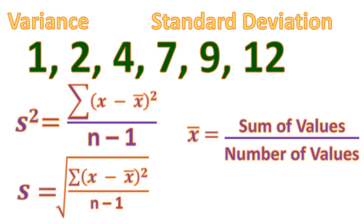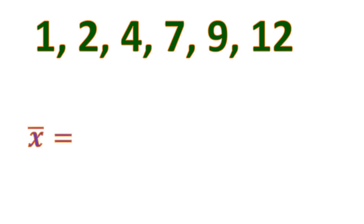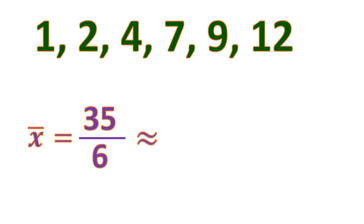The formula for mean is the sum of all values divided by the number of values. Adding 1 plus 2 plus 4 plus 7 plus 9 plus 12 gives 35, divided by 6 values. So the mean is approximately 5.83 — that's the value we need for computing variance and standard deviation.